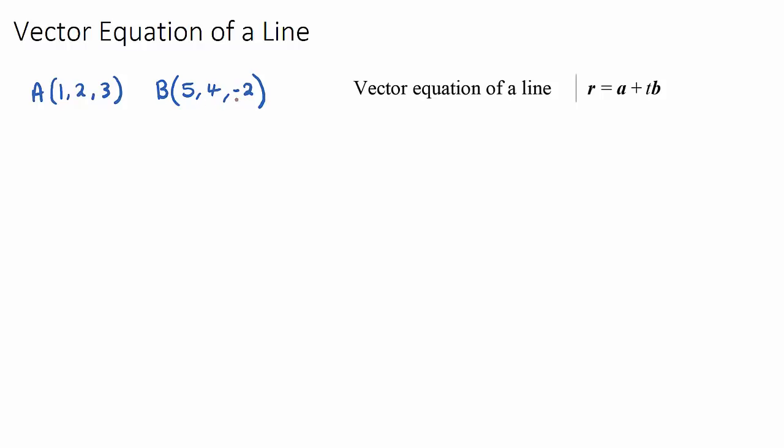What we're going to do is find the vector equation of a line that passes through both of these two points. We have probably seen a similar topic before when we did coordinate geometry, which may have been a couple of years ago.